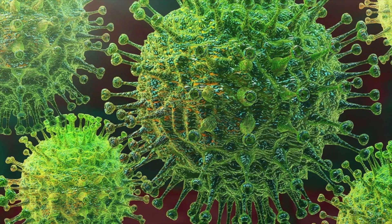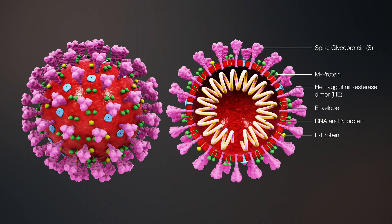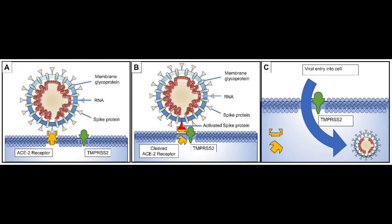Contrary to its complexities, it has a very simple structure. An envelope enclosing RNA and nuclear protein. The envelope also consists of spike, membrane and envelope proteins along with some accessory proteins. We will be focusing on the spike protein,